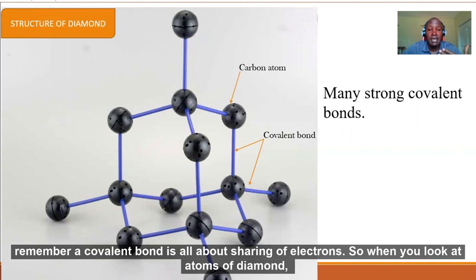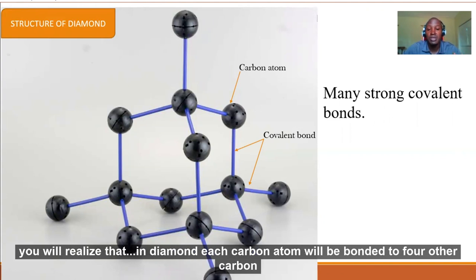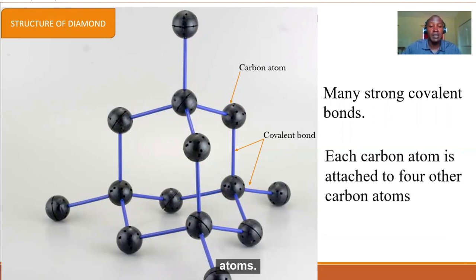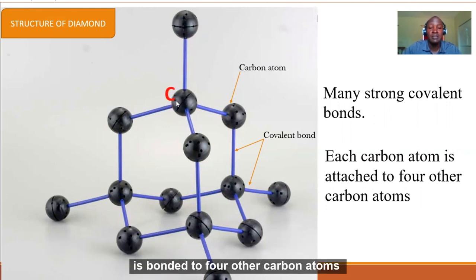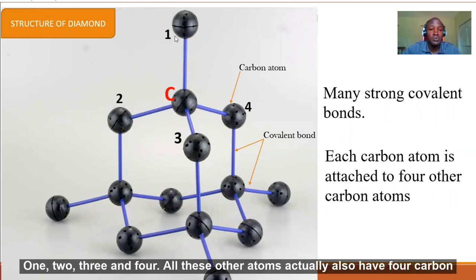So when you look at atoms of diamond, you realize that in diamond, each carbon atom will be bonded to four other carbon atoms. Let's take a look at the carbon atom labeled C in the center. We shall realize that this carbon atom C is bonded to four other carbon atoms: one, two, three, and four.